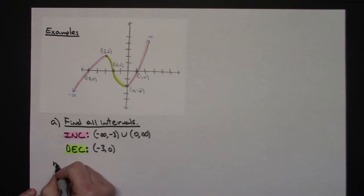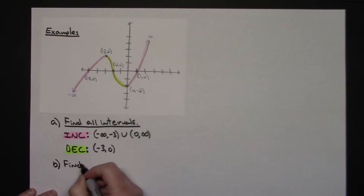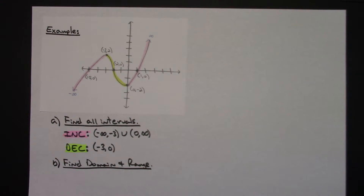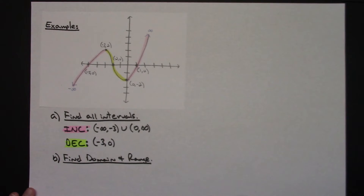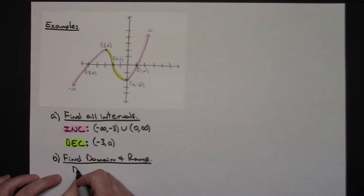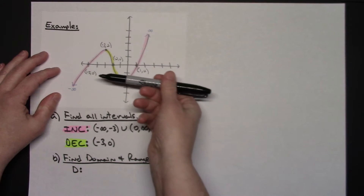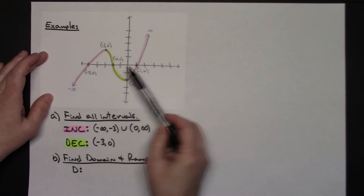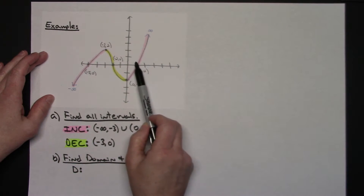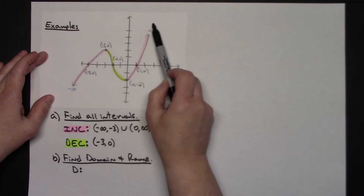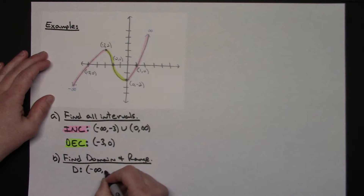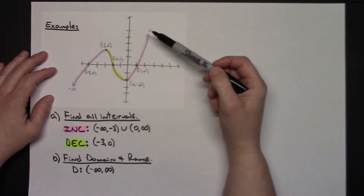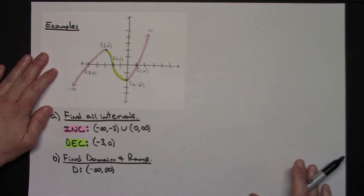Now let's find domain and range. Domain is the x values left to right across your graph, and range is your y values up and down. Since this graph has arrows on both ends — going left forever and going to the right forever — the domain is negative infinity to positive infinity. If you know your families of functions, this is a polynomial curve like x-cubed, and all polynomial curves have a domain of negative infinity to positive infinity, or all reals.